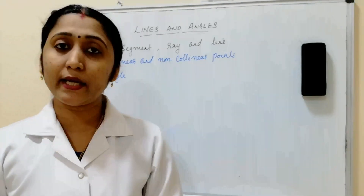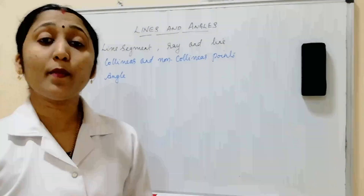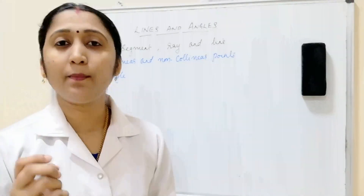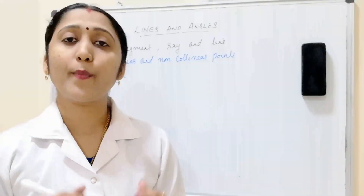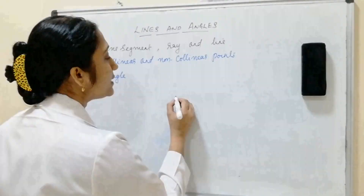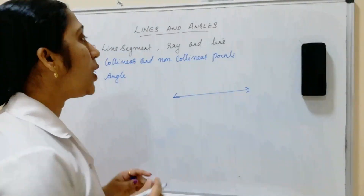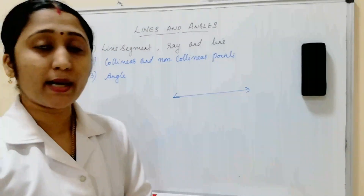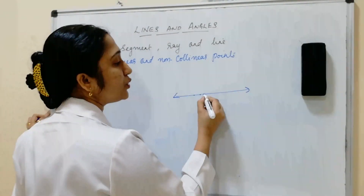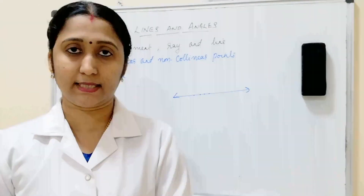Collinear and non-collinear: when three or more points lie on the same line, they are called collinear points. For example, points 1, 2, 3, and 4 all lying on the same line — these are collinear points.